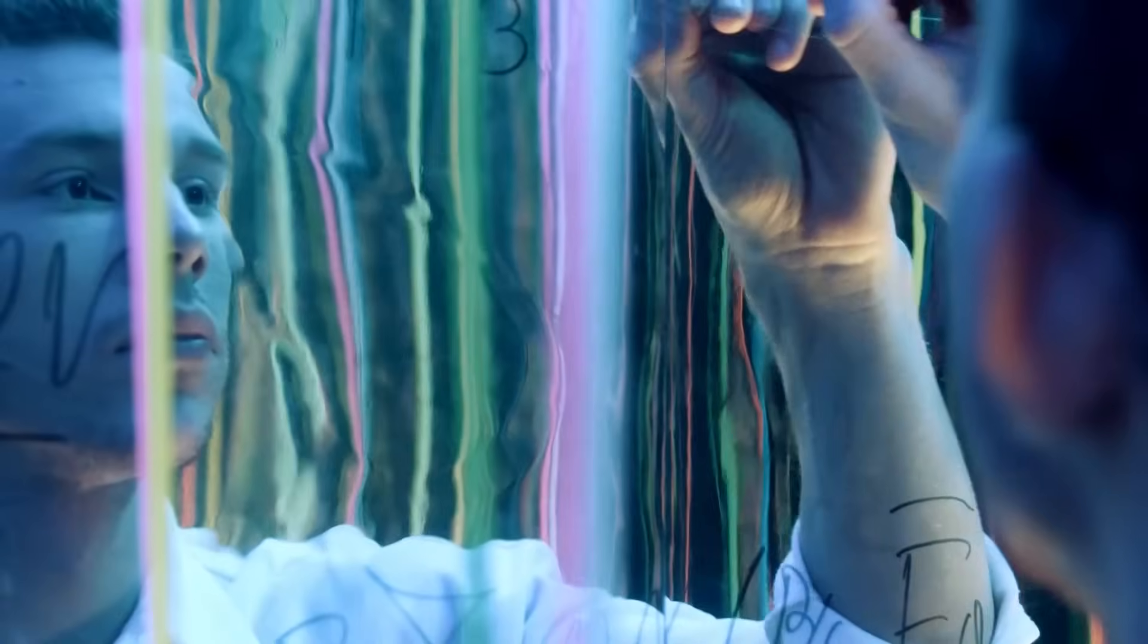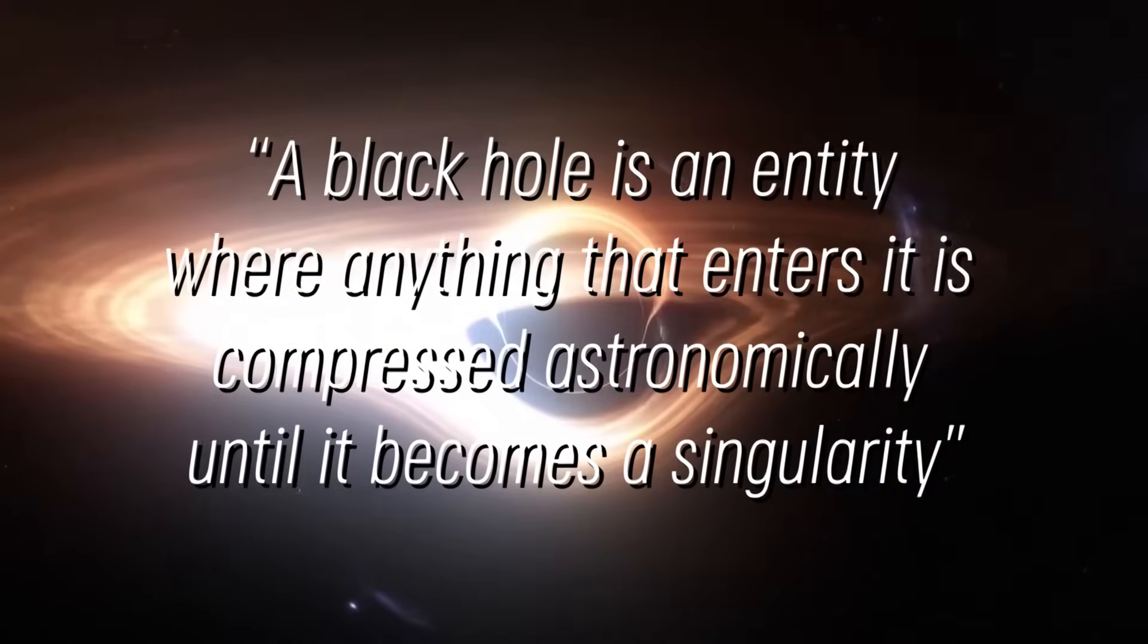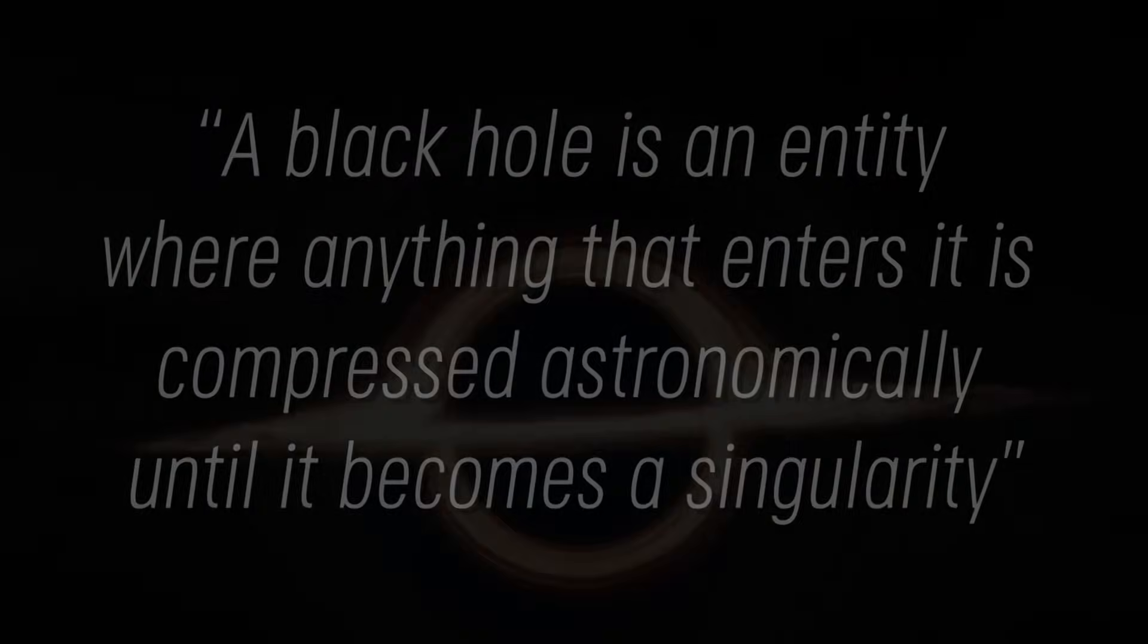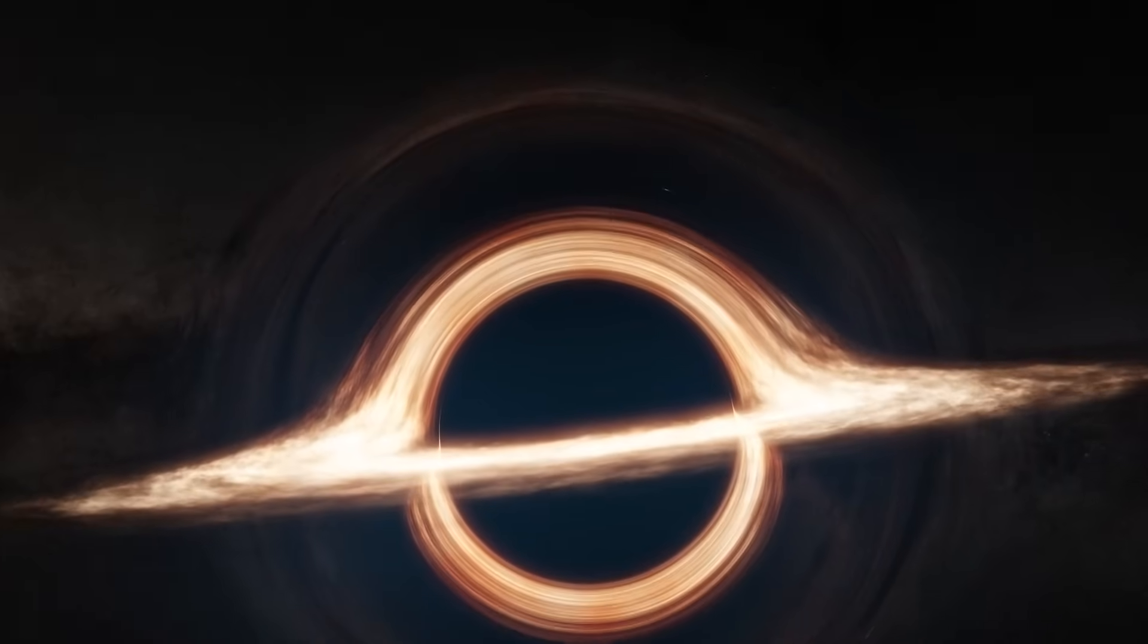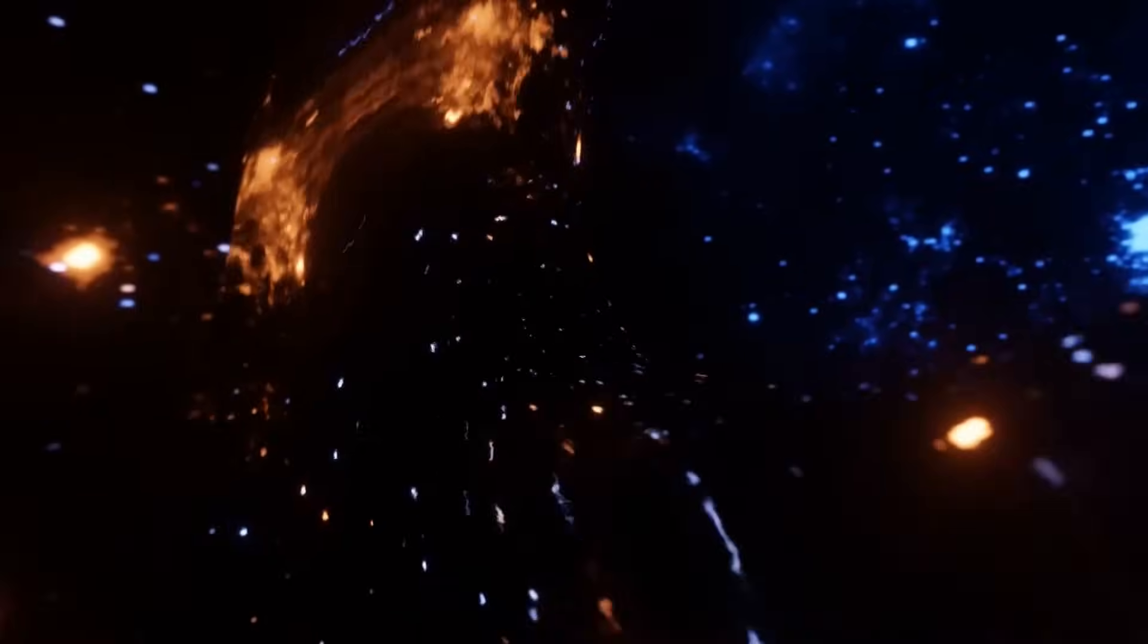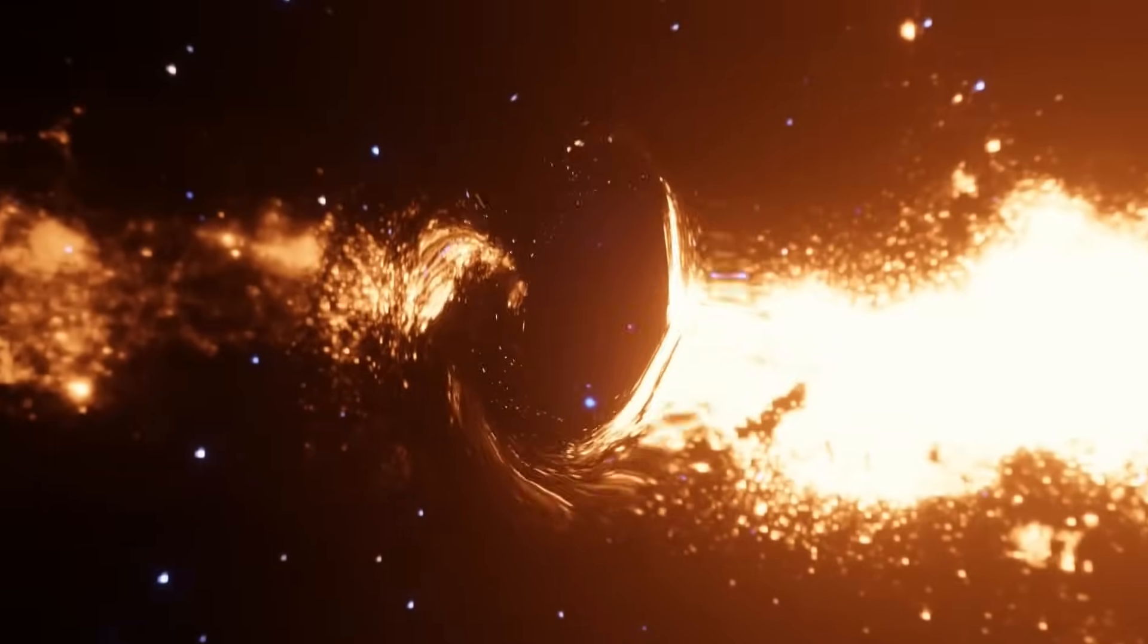According to most physicists around the world, a black hole is an entity where anything that enters it is compressed astronomically until it becomes a singularity. They have explained that due to the way black holes work, if someone were to fall into one, they would stretch like spaghetti, slowly dying in this form before reaching the final spaghetti form. This is one of the scariest parts of the research done on black holes and is also what makes everyone want to know all the details.